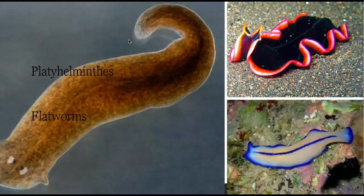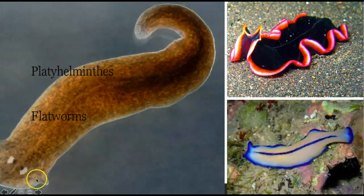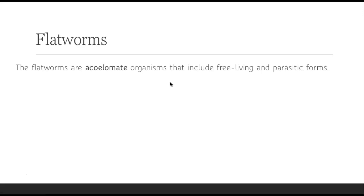So let's get into the platyhelminthes, or the flatworms. Here are some images of them. You can see their little eye spots there for this little flatworm — that is cephalization, with eye and basically neuron firing action happening up in the head region. These are the flatworms. They are acoelomate, meaning they do not have a body cavity. And they could either be free living or they can be parasitic. A parasite is an organism that lives on or in a host organism and doesn't really survive without doing so — it'll suck the nutrients out of the host.